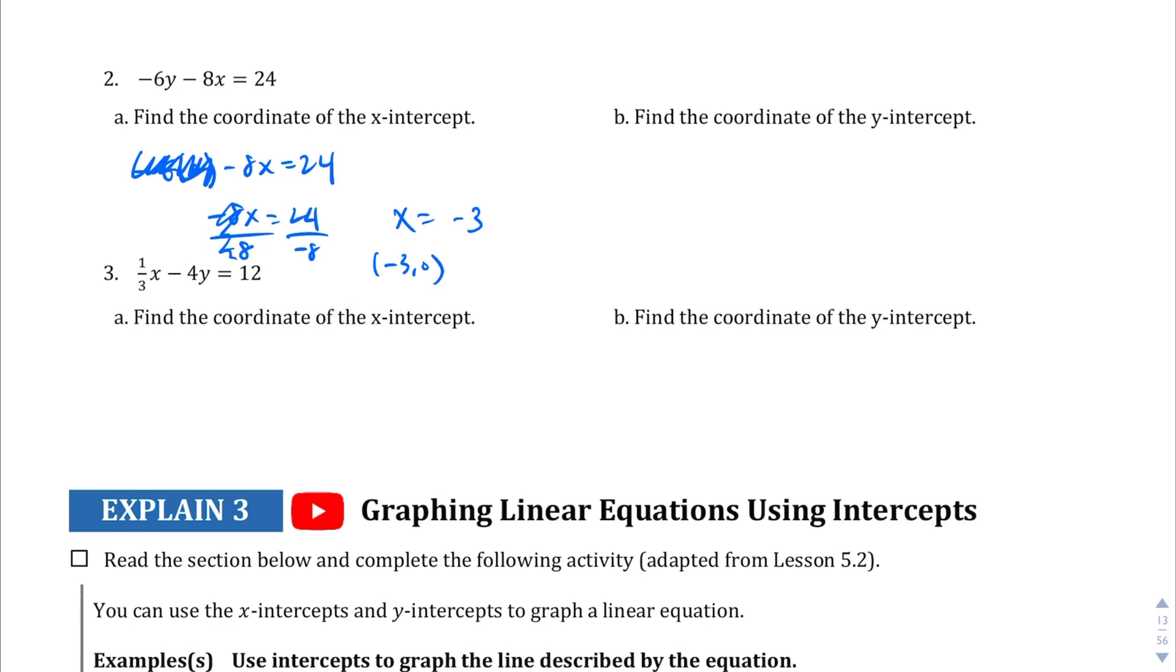Let's find the coordinates of the y-intercept, which means we're going to make x equals 0. Negative 6y minus 8 times 0 equals 24. That makes that go away. We have negative 6y equals 24. Divide both sides by the coefficient of negative 6. And I'm running out of room here. So y equals, what is that, negative 4, since 24 divided by negative 6 equals negative 4. And so the coordinates are going to be 0, negative 4 for that one.